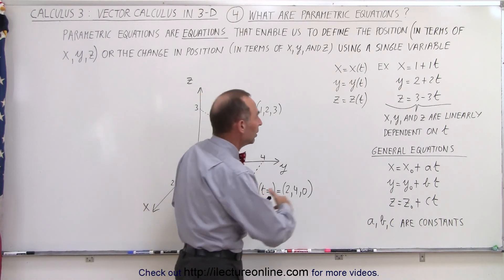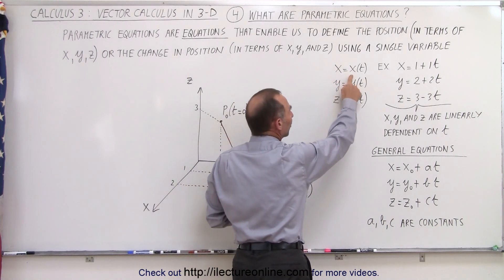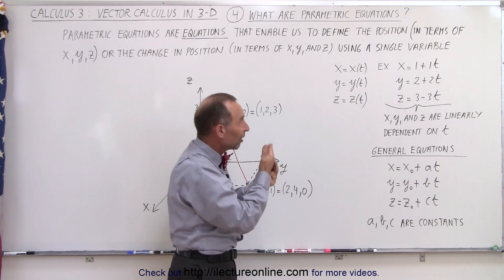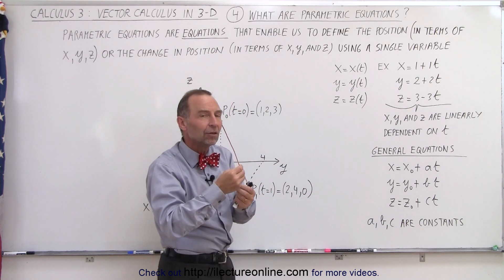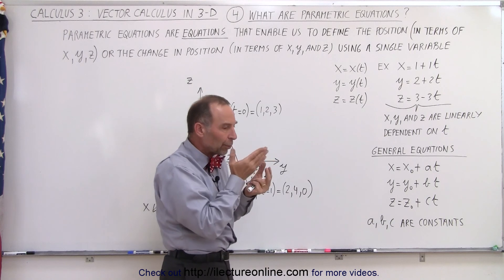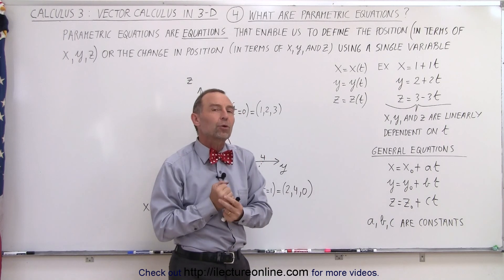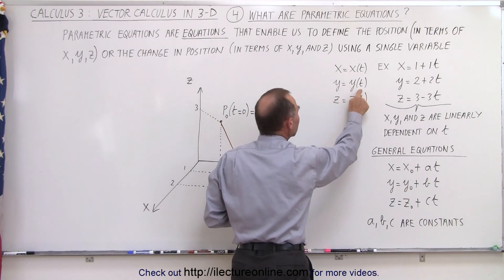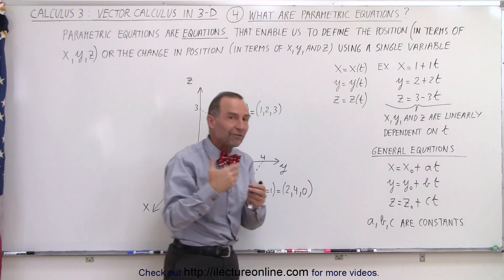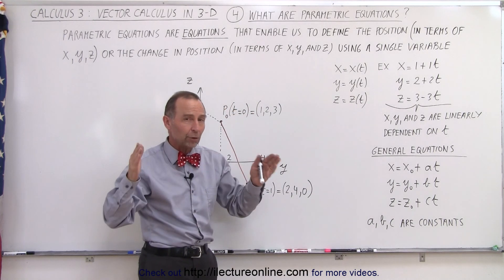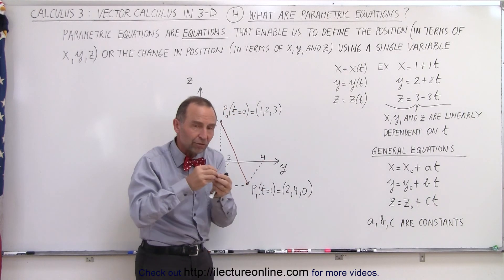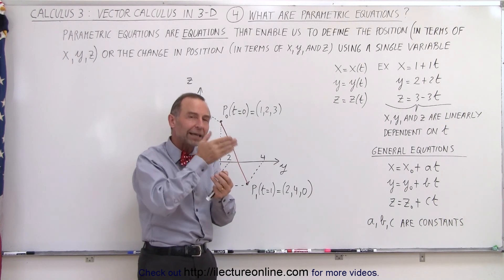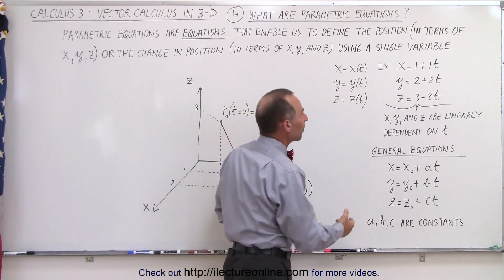So in general, x now becomes a function of that parametric variable. Let's say our parametric variable is t. That becomes the variable we're going to use in our parametric equations. We're going to define x in terms of t, y in terms of t, and z in terms of t — so all three variables x, y, and z are expressed in terms of some function of t. Then when t changes, we can calculate how much x, y, and z change.